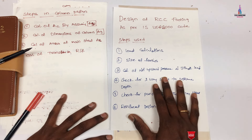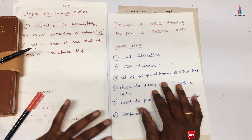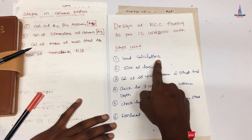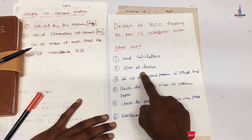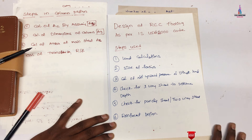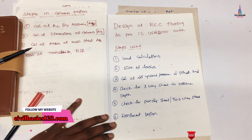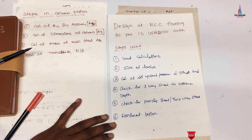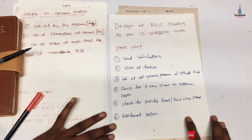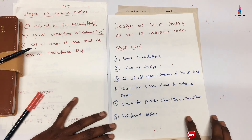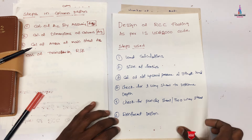Initially, we need to consider six steps for RCC foundation design. The first is load calculations, the second is the size of footing, the third is calculation of net upward pressure at ultimate load, the fourth is check for one-way shear to determine the depth, the fifth is check for punching shear (two-way shear), and the sixth is reinforcement design.